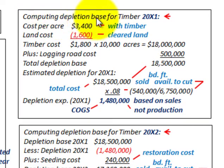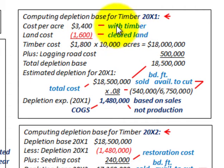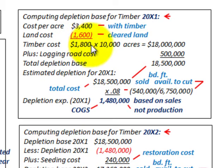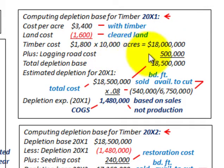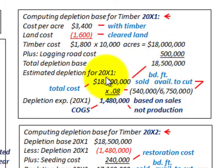For our depletion base in the first year, 20x1: the cost per acre was $3,400 with the timber on it, and the land cost alone (cleared land) was $1,600 per acre. The difference gives us the timber cost of $1,800 per acre. With 10,000 acres purchased, the total timber cost on the land is $18,000,000. Adding the logging road cost of $500,000 gives us a total depletion base for 20x1 of $18,500,000.